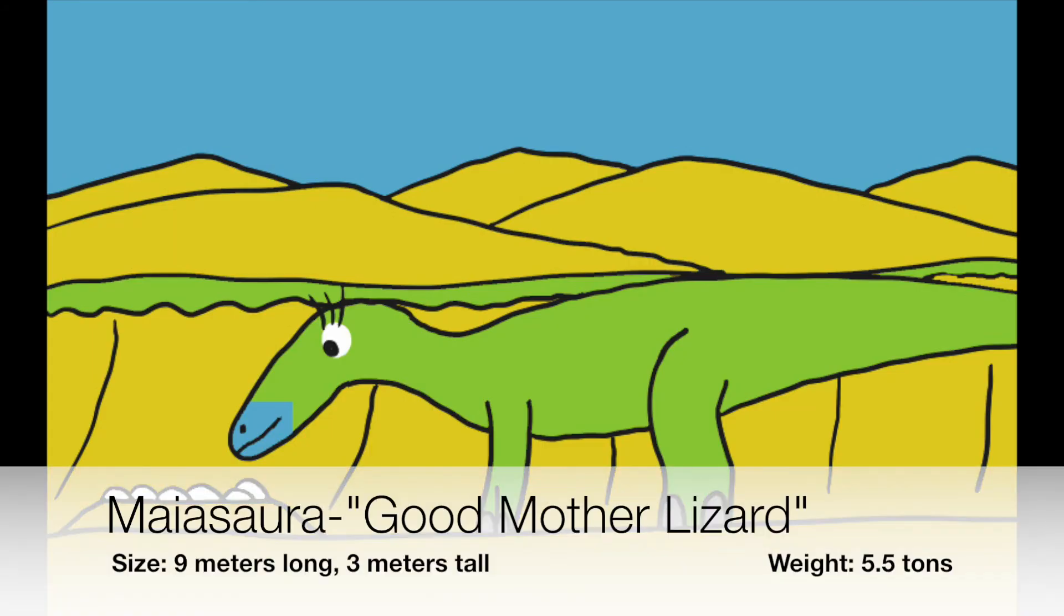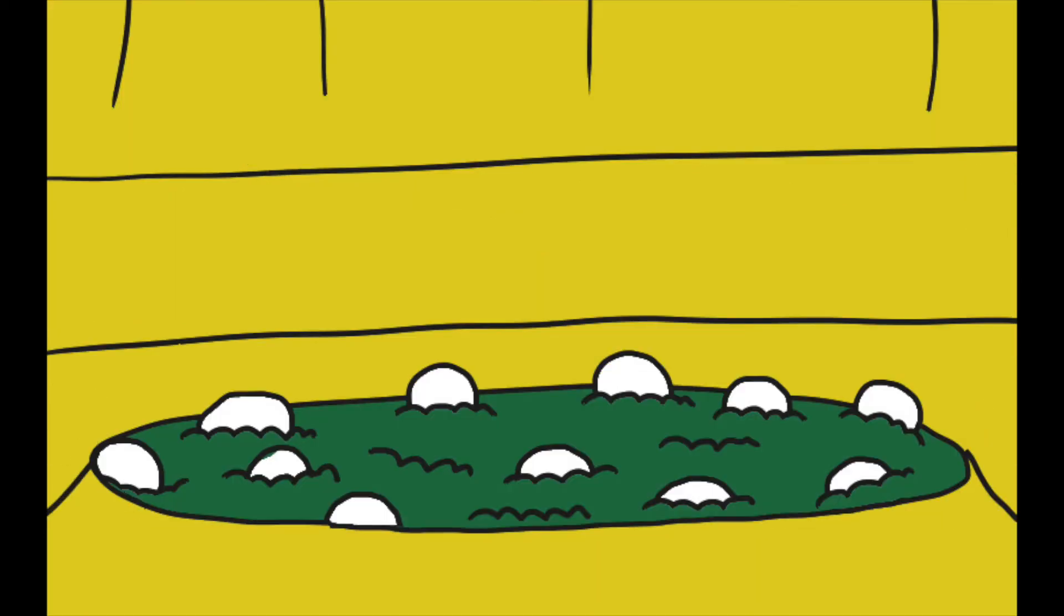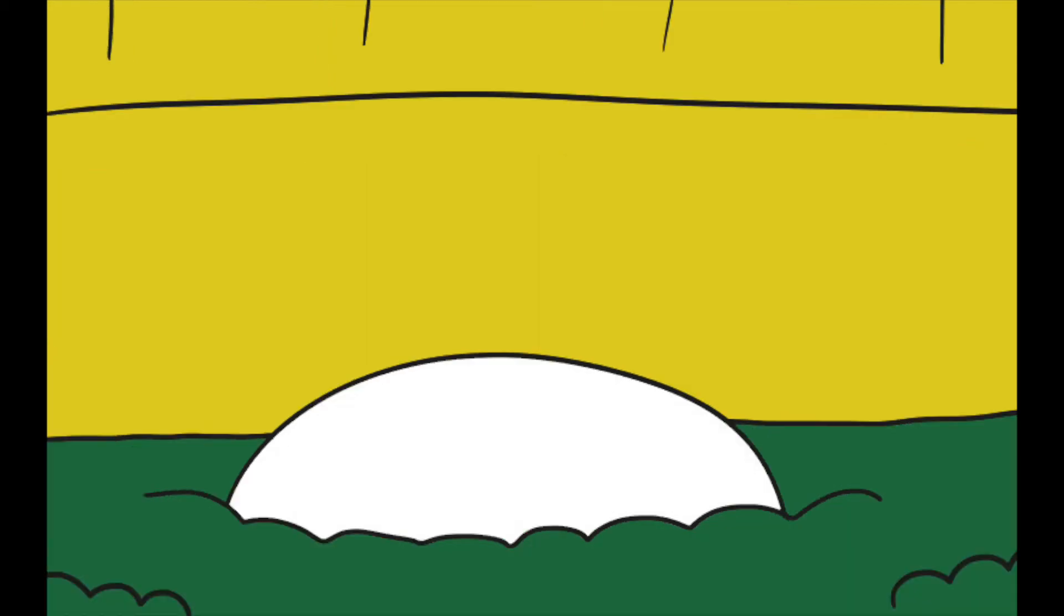The good mother lizard, Maiasaura, is called that because they are believed to be good at caring for their young. Fossils of adults were found next to their nests. The nests are two meters long in diameter, and inside them are forty eggs that are round-shaped. The mother would cover the eggs with leaves or other sediment to hide them from predators and to incubate them.